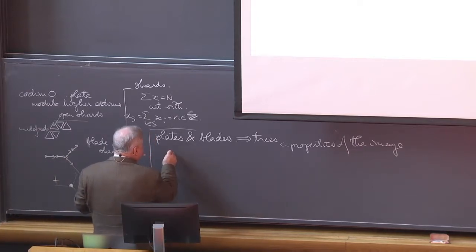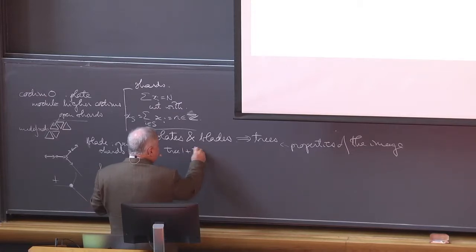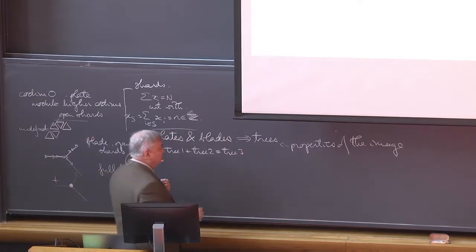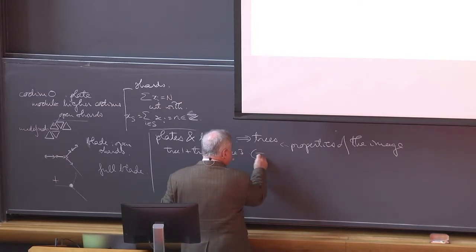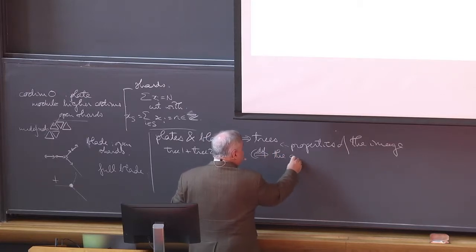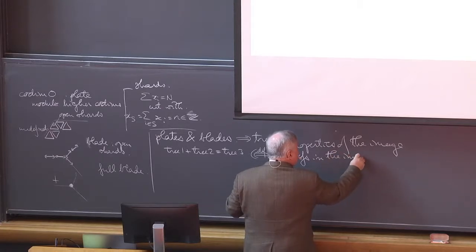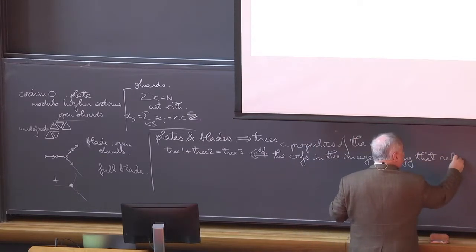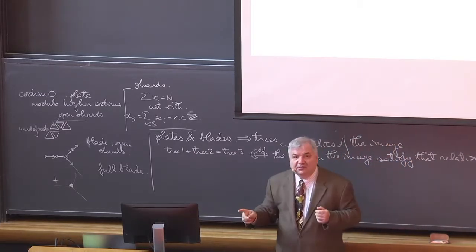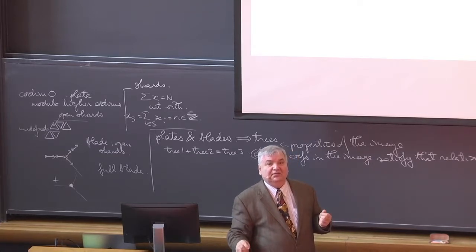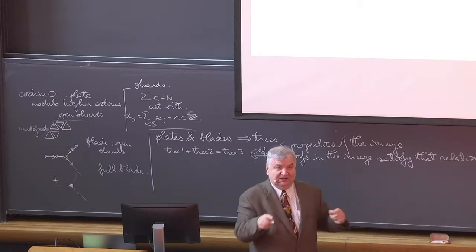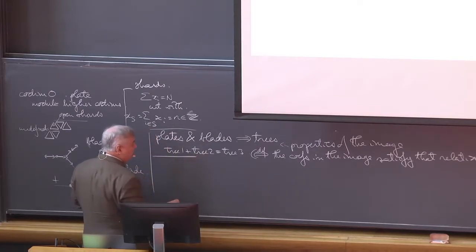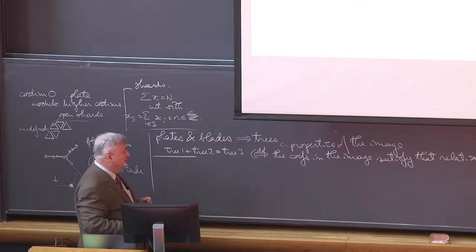Let's say that if we write T1 plus T2 equals T3, what we mean by this is that the coefficients in the image satisfy that relation — so it's a shorthand. For instance, the Jacobi identity: the coefficients of the trees with the labels permuted — the sum of the coefficients is zero. So let us write here the properties of this image.